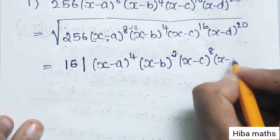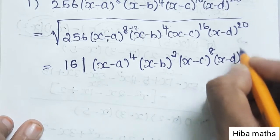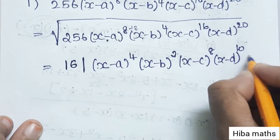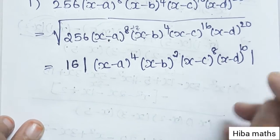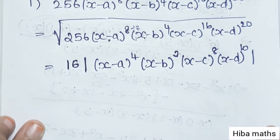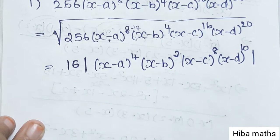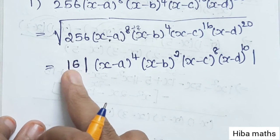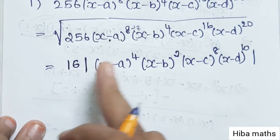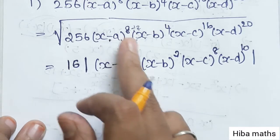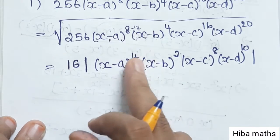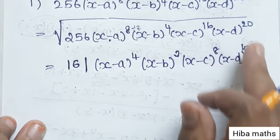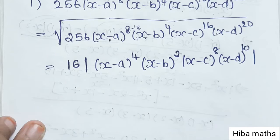So x^d power 20 divided by 2 gives 10. This is the answer. You can simply take the square root of any term by dividing the exponent by 2.